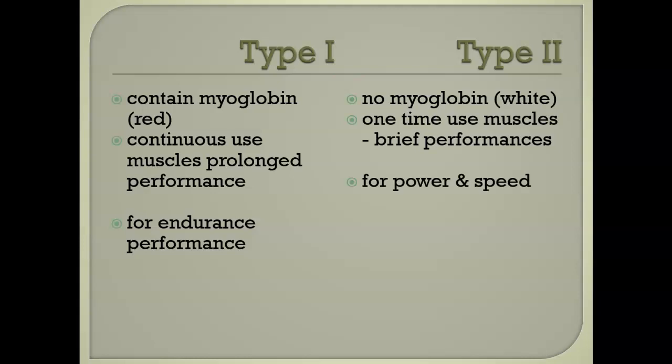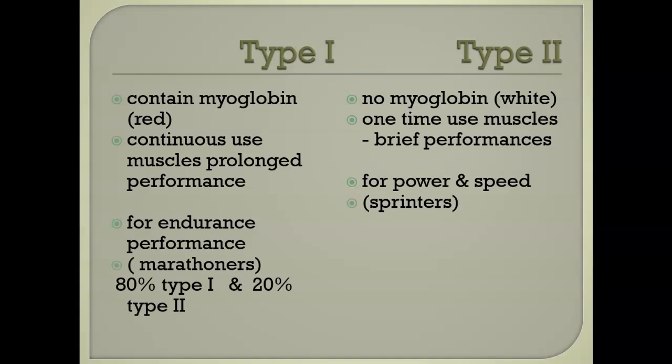Some books compare a long-distance marathon runner to a sprinter running a 100-meter dash. Every muscle has both types — a percentage of both in every muscle. A marathoner's leg muscles, like the rectus femoris, would be about 80% type 1 and 20% type 2, whereas a sprinter's would be about 20% type 1 and 80% type 2.